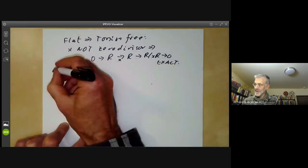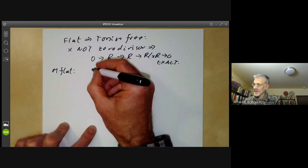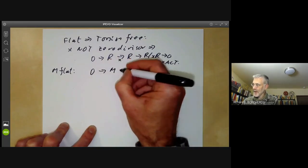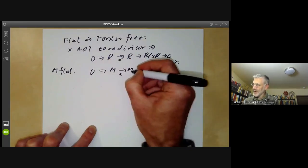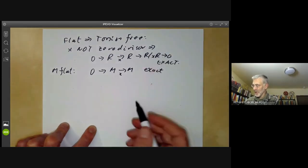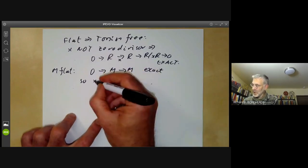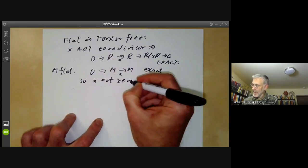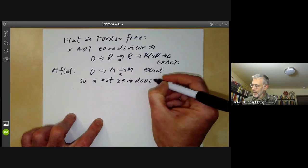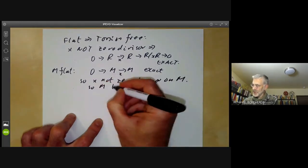And if M is flat, we can tensor this and still get an exact sequence, so we get 0 → M → M is exact. So X is not a zero divisor on the module M, so M is torsion-free.